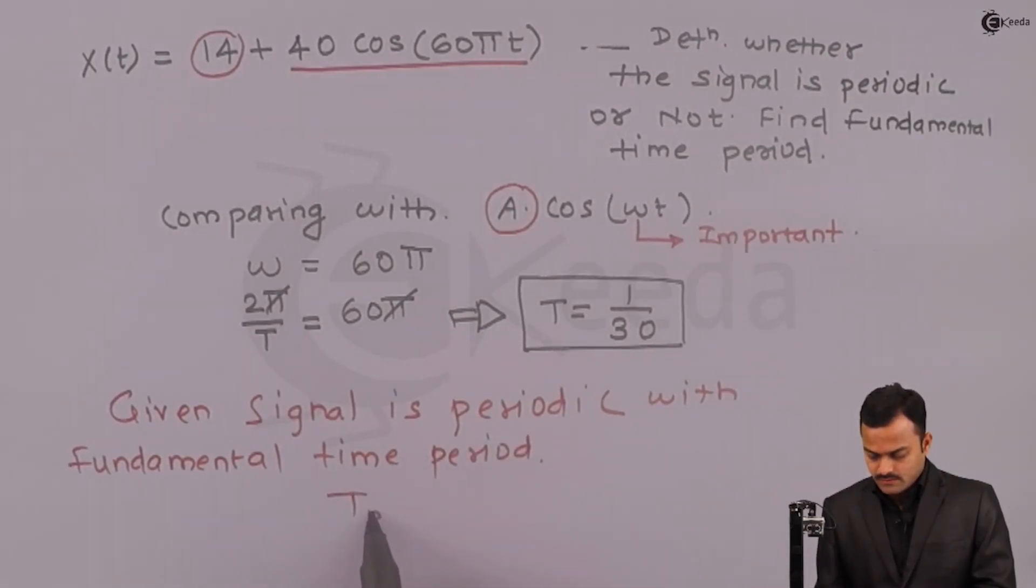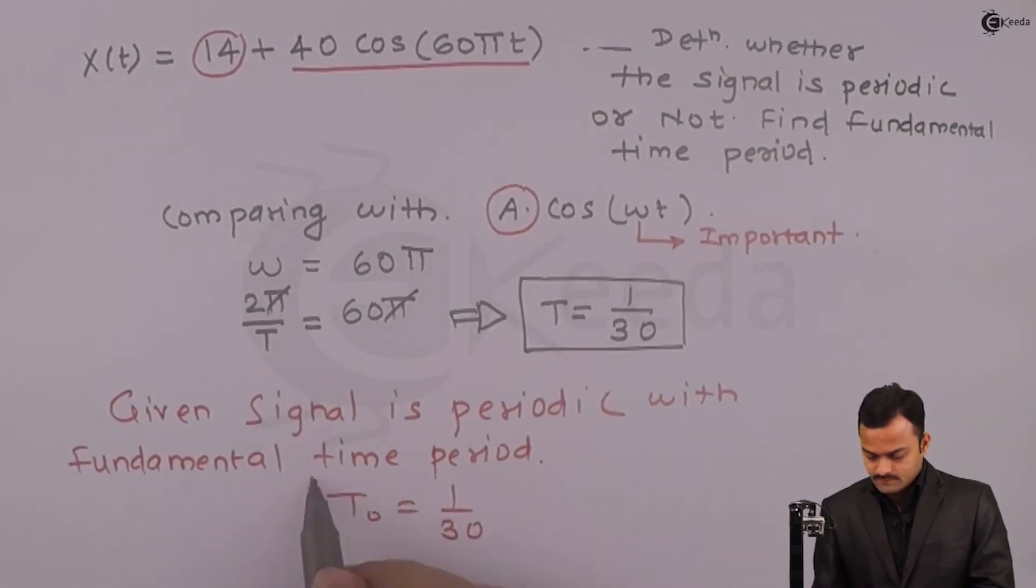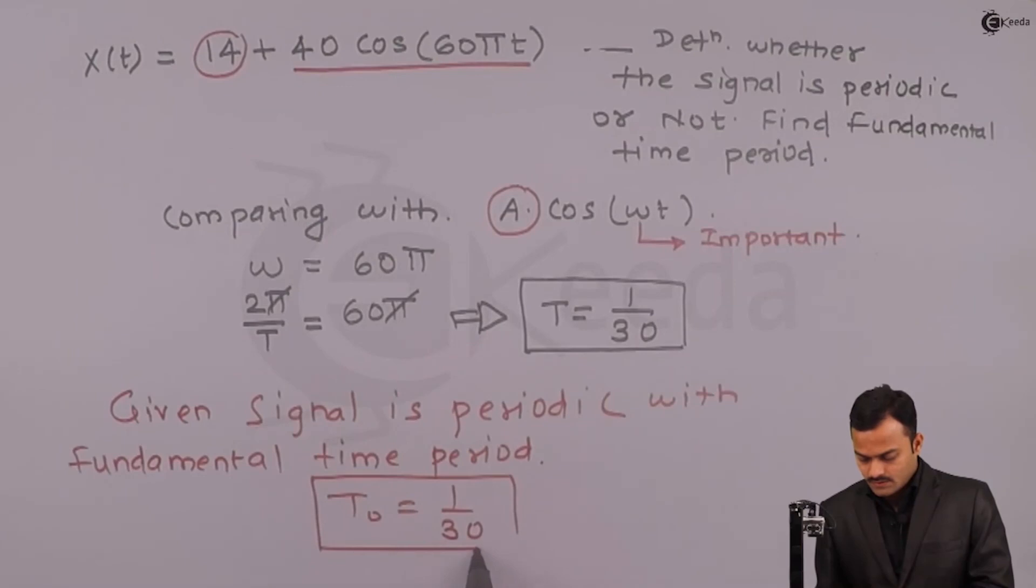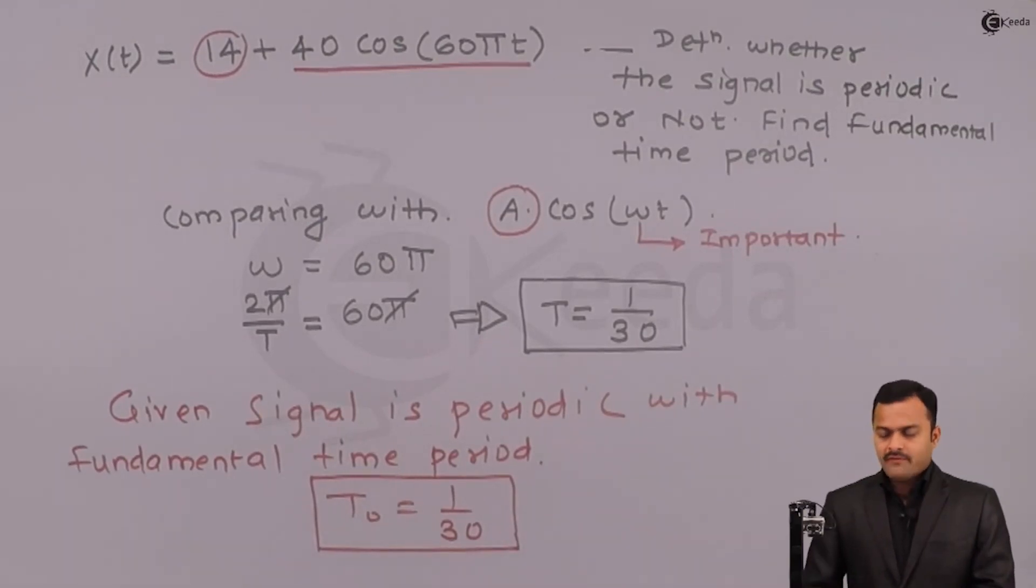Which is T₀ equal to 1 upon 30. So we have taken an elementary example to solve so that the concept can be very well understood. You are welcome. Thank you.